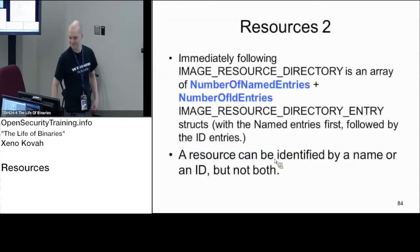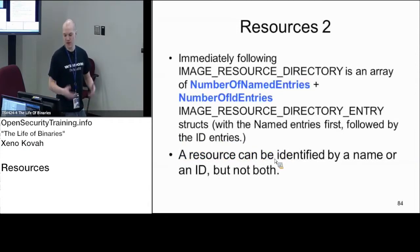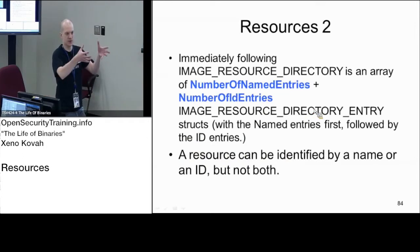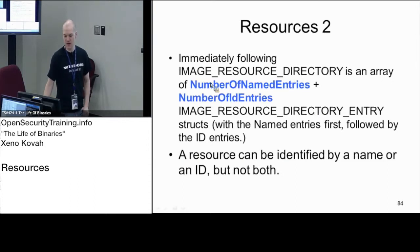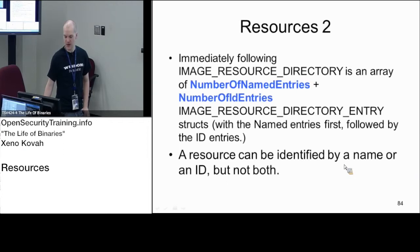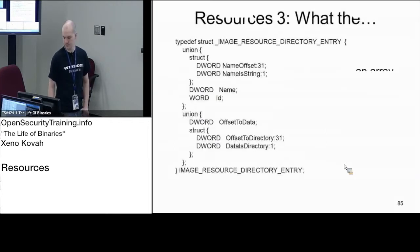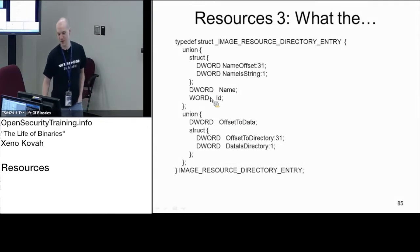Immediately following the resource directory, there's going to be an array of resource directory entry structures. We start with the resource directory and then we've got an array of resource directory entries immediately after it, where the number of entries equals the number of named entries plus the number of ID entries. The resources can be identified by name or ID, but not both.